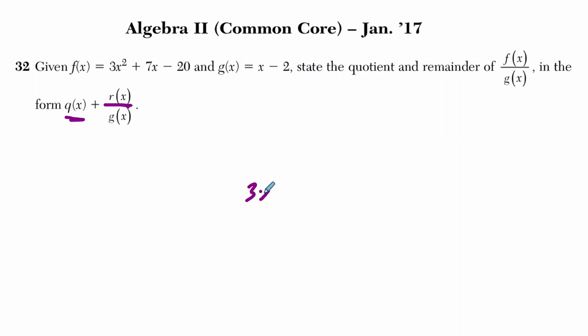This is a polynomial long division problem. I've got 3x squared plus 7x minus 20. I'm dividing by g(x), so it's divided by x minus 2.